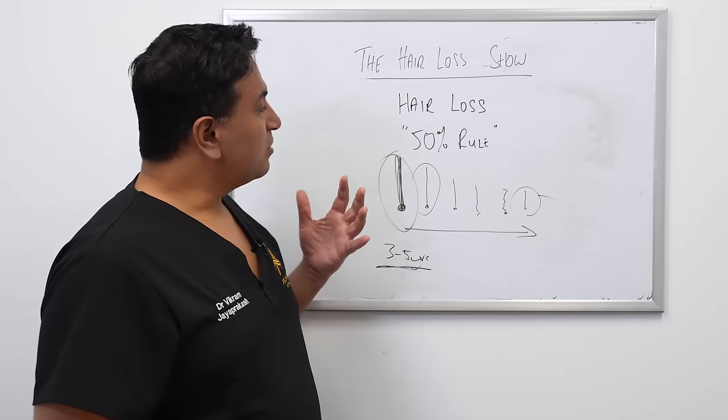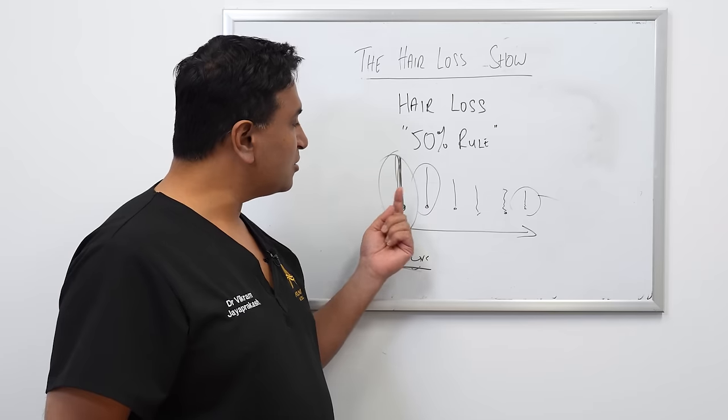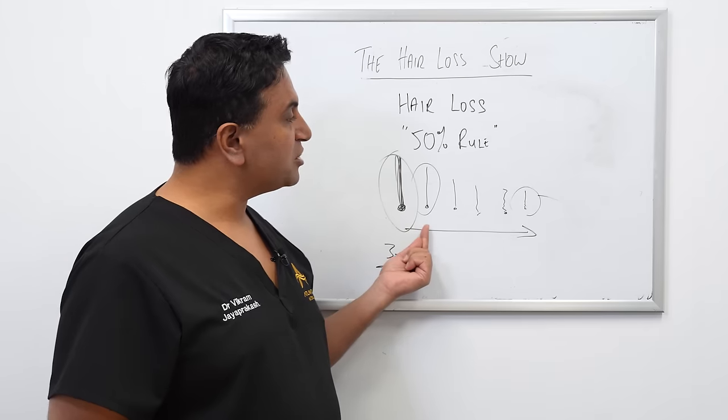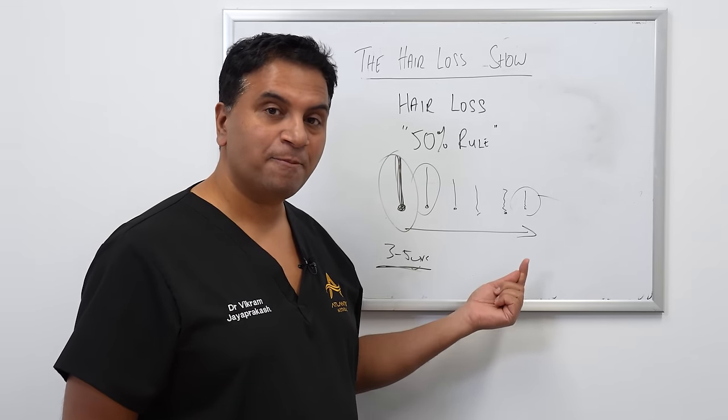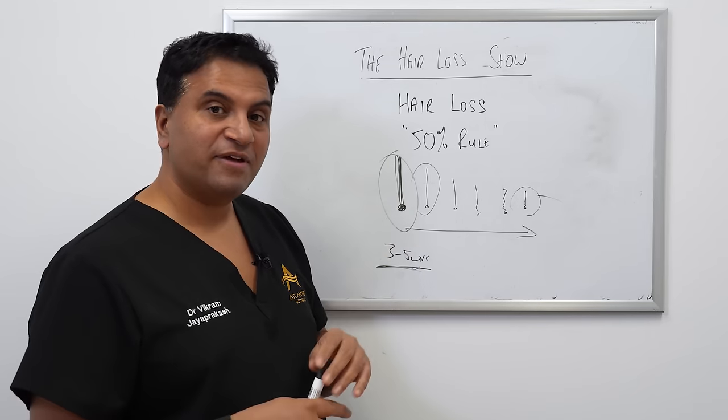So this is the important thing to understand, that hair loss is not going from thick hair to no hair. It is actually a process of miniaturizing over every life cycle of that hair. And this is important when we look at medical treatment for hair loss.